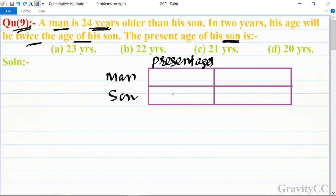Let the son's present age be x. According to the question, the father is 24 years older. So we have present ages, and then ages in two years.